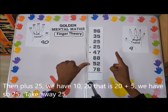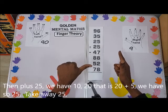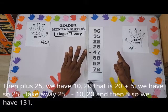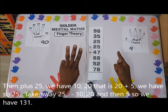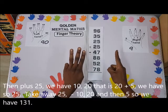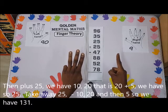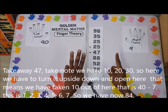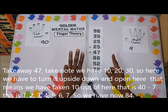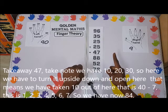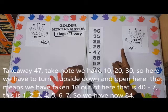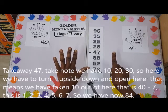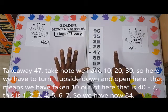That is 20 plus 5. We have 10, 20 plus 5. Taking away 25: 10, 20, and then 5. So we have 10, 20, 30. Here we have to turn the hand upside down and then open — that means 10 out. 10 minus 7 of 10.